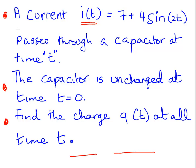A current i(t) is defined as 7 plus 4 sin 2t. And this passes through a capacitor at time t. Importantly, the capacitor is uncharged at time t equals zero. The question is, find the charge q(t) at all times t.